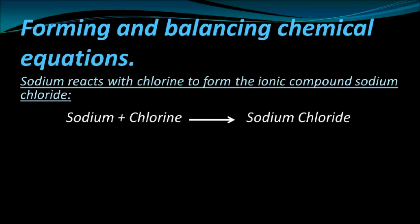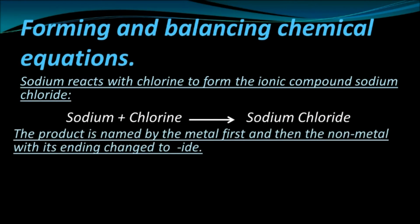If sodium reacts with chlorine to form the ionic compound sodium chloride, the chemical equation would be: sodium plus chlorine gives sodium chloride. Notice how the product is named: the metal is written first, and then the non-metal with its ending changed to -ide.